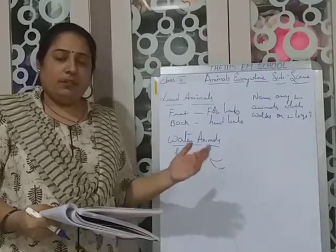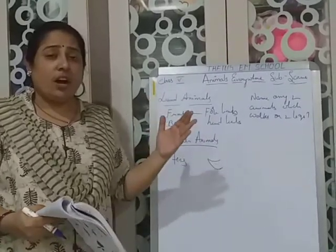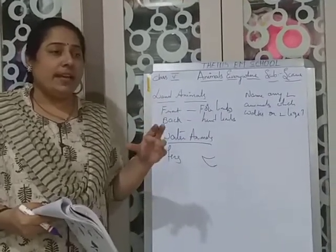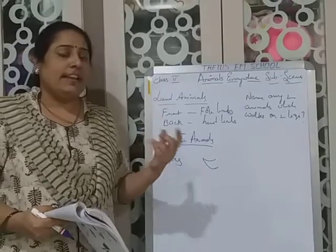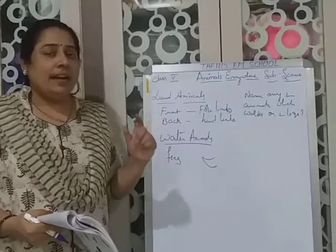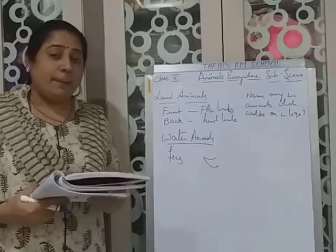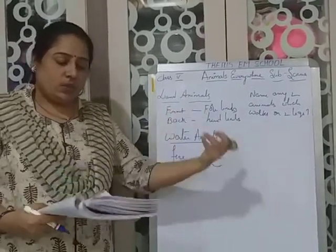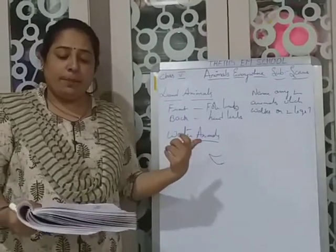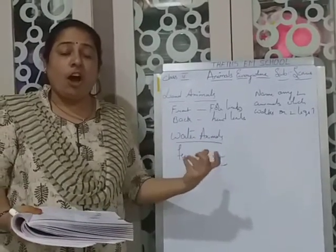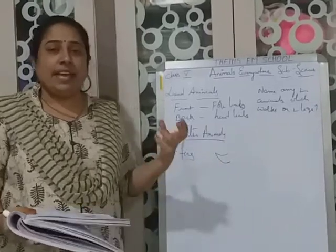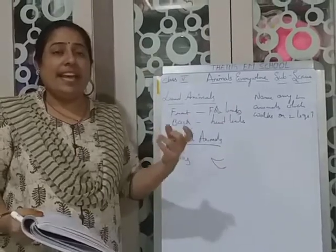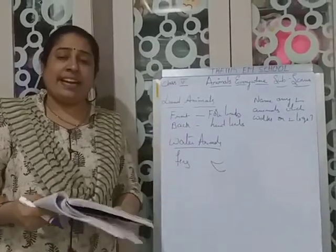Frog — I told you — is an amphibian. What is an amphibian? Amphibian means it lives both on land and in water. Frogs have webbed feet to swim. But when on land, they jump with the help of their long hind legs. They won't walk — they jump with their hind legs.